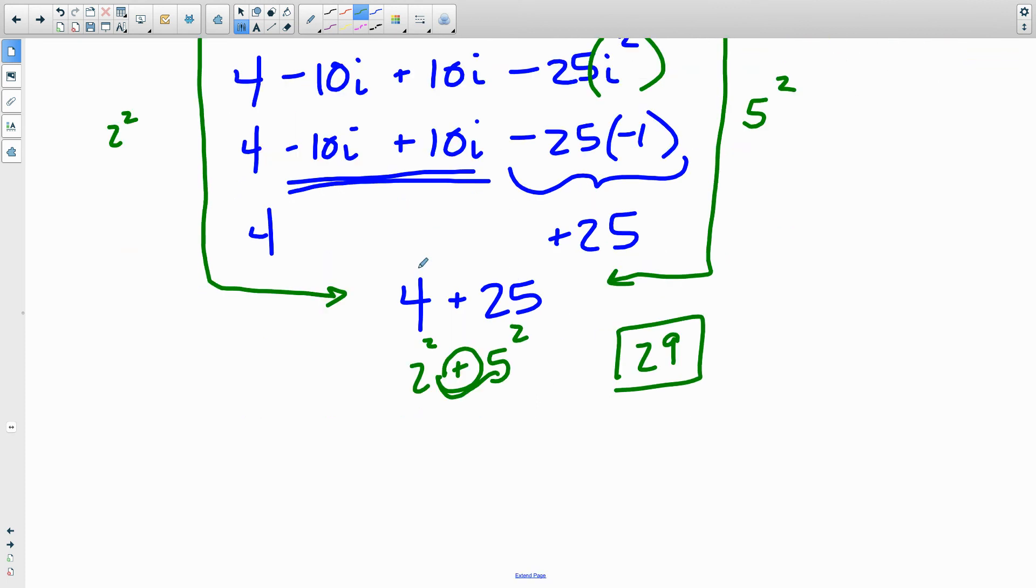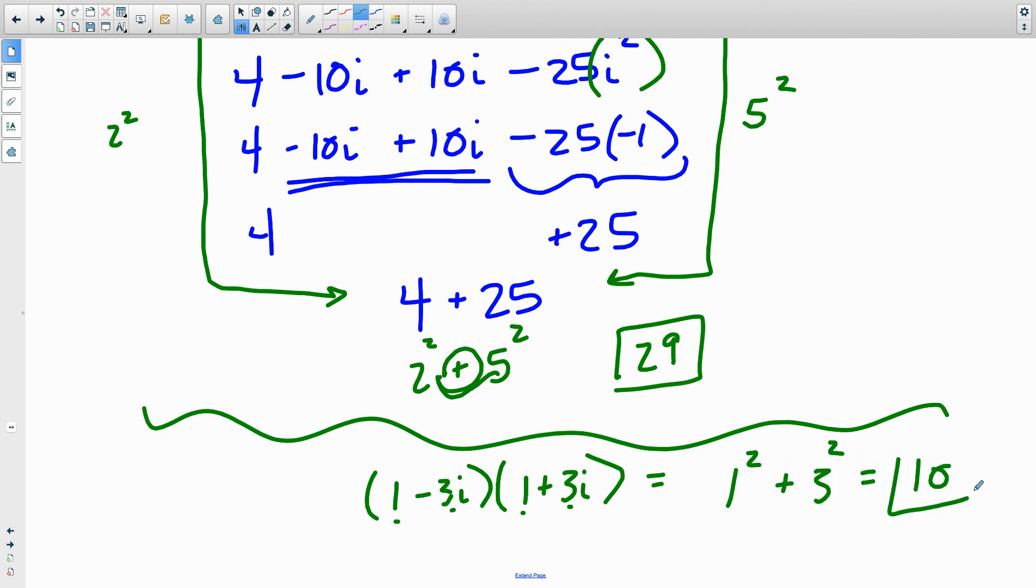Just another brief example off the cuff here. Suppose I was multiplying 1 minus 3i times 1 plus 3i. Recognize that it's the same number in front, the same number in back, 1 with a minus, 1 with a plus. So this is equal to 1 squared plus 3 squared, which would be 10.